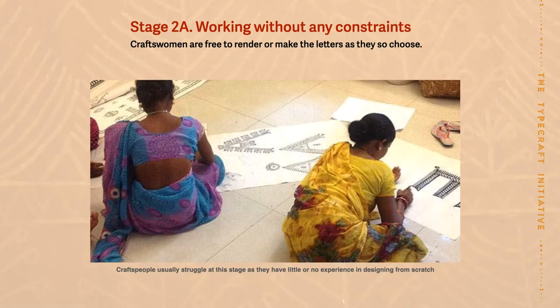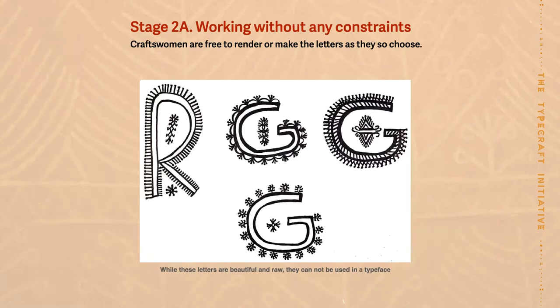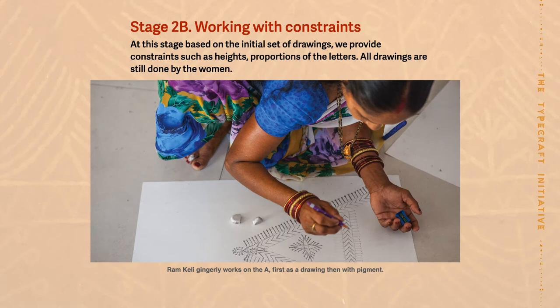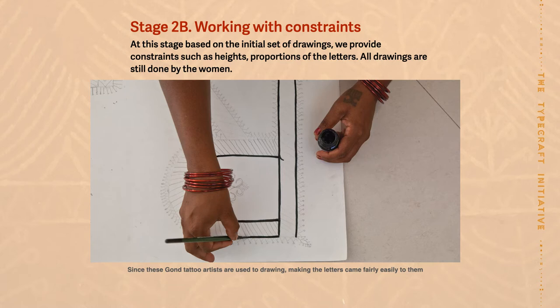The next stage is to work with the craftspeople without any constraints. We initially asked them to make the letterforms themselves based on their own craft. Here we see the tattoo art becoming an alphabet for the first time, done by the craftswomen. However, this cannot be used as a font because the cap heights are variable. So we give them a set of constraints in terms of cap heights, overall proportions and thicknesses. At this stage, we have a good sense of what sizes the women work at, since each craft has its own scale. Then they start making all the various letterforms. Since there were three women, we decided to work with three different styles.